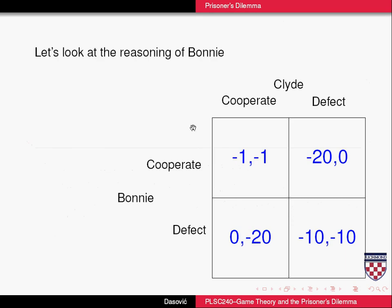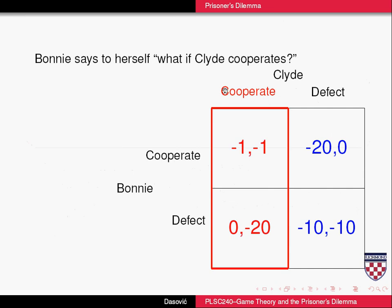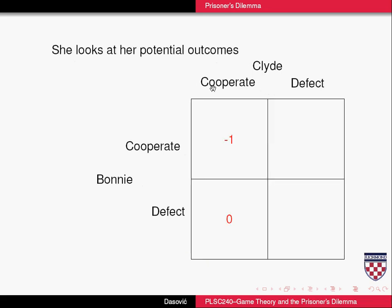Let's look at Bonnie's reasoning. She says to herself: what if Clyde cooperates? Assuming Clyde cooperates, she can either cooperate or defect. If she cooperates, she gets one year in jail; if she defects, she gets zero years. If she's instrumentally rational and maximizing her expected utility, she will choose to defect, because not being in jail has higher utility than being in jail for a year.